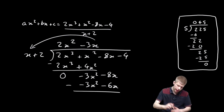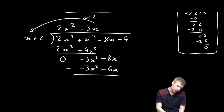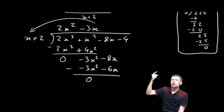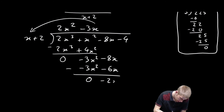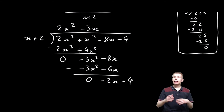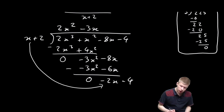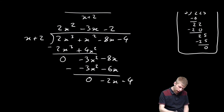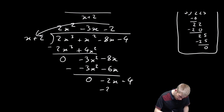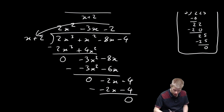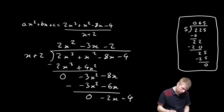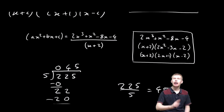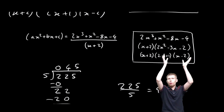Be careful here because I'm taking away negatives. −8x minus −6x is the same as plus 6x, giving −2x. Then −4 comes down. How many times does x go into −2x? It goes in −2 times. I multiply −2 by (x + 2) to get −2x − 4, and the remainder is 0. So my quadratic is 2x² − 3x + 2, which is exactly the same as before, and then I just factorize that to get the final answer.